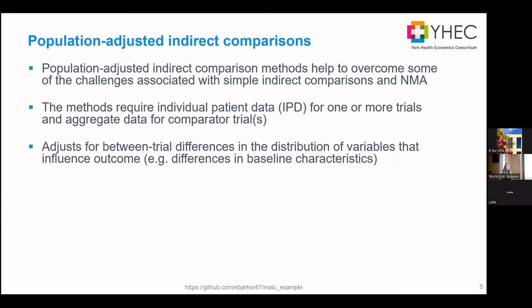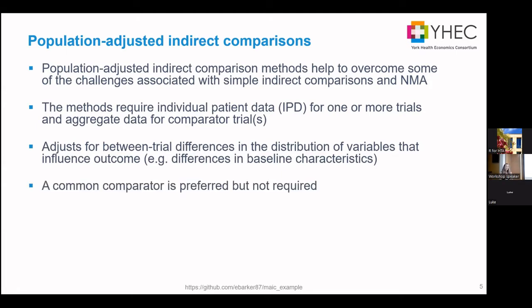The aim is to adjust for differences between trials — essentially differences in baseline characteristics. Population adjusted methods prefer a common comparator, but in cases where it's not possible, such as single-arm trials, we can still use these methods to compare without one.